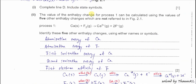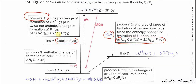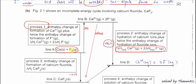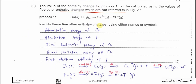Part B(ii): The enthalpy change for process one can be calculated using five other enthalpy changes. Process one goes from calcium metal and fluorine gas to the gaseous ions of calcium and fluoride. Starting with calcium: calcium first undergoes atomization, then the gaseous calcium atom undergoes first ionization and second ionization — that's three enthalpy changes so far.